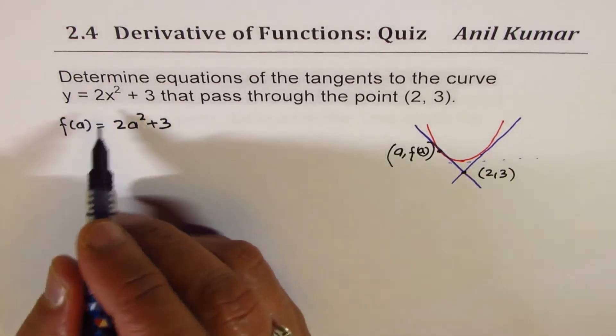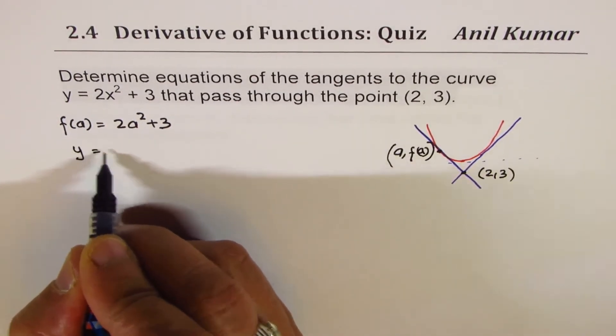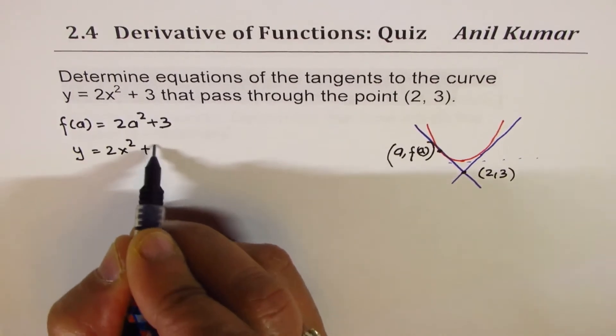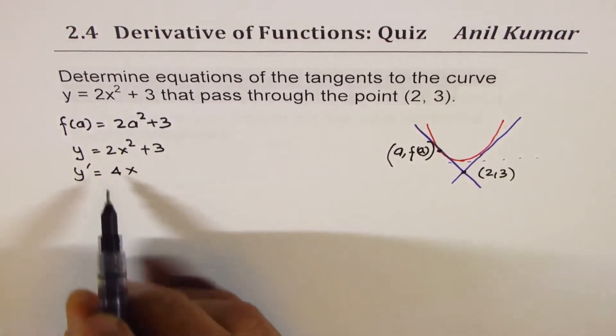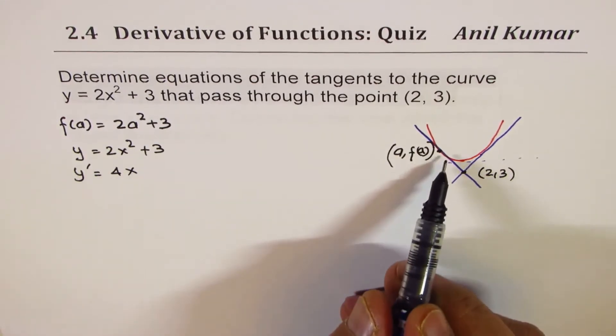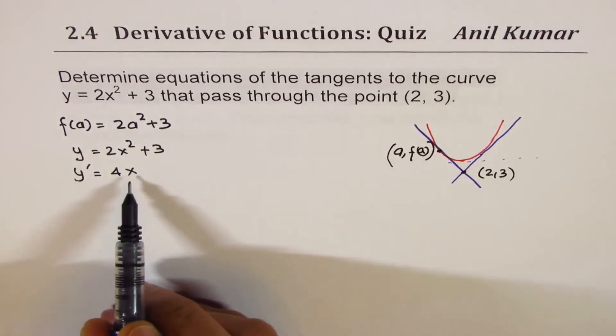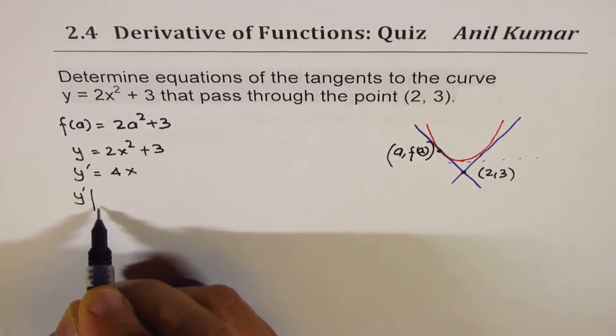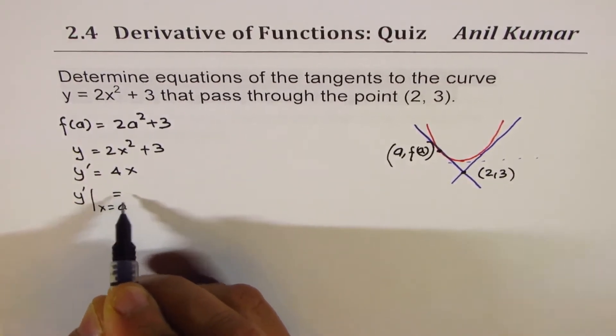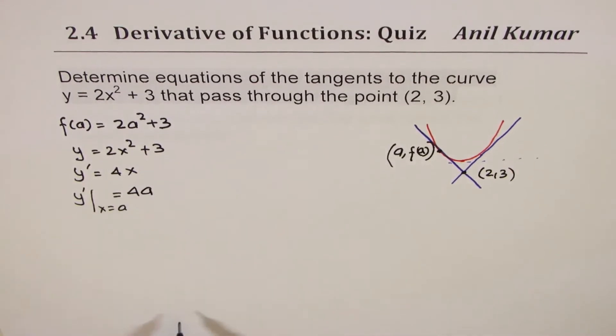Now, what is the derivative of y equals 2x squared plus 3? The derivative is 4x. That means the slope of the tangent line at any point is 4 times x. So at a, the derivative will be 4a.